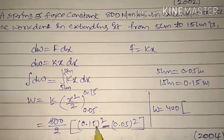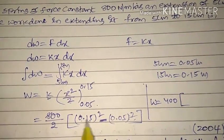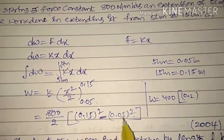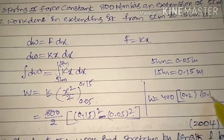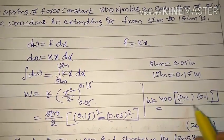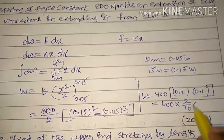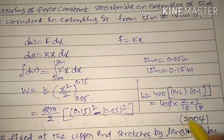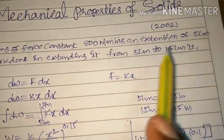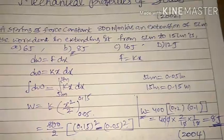Using the identity a² − b² = (a+b)(a−b): (0.15 + 0.05) = 0.2 and (0.15 − 0.05) = 0.1. So W = 400 × 0.2 × 0.1 = 400 × (2/10) × (1/10) = 8 Joules. The answer is 8 Joules, which is option B.